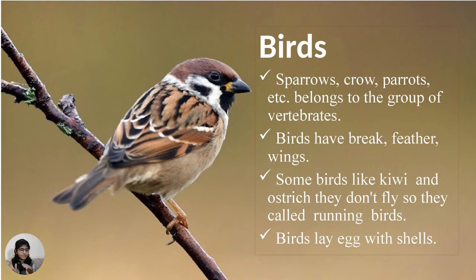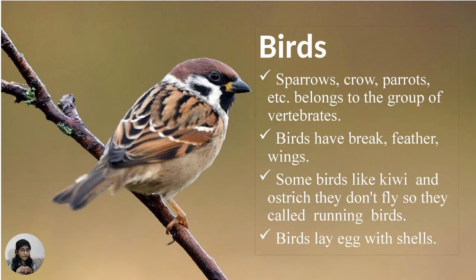Birds: Sparrows, crows, parrots, etc. belong to the group of vertebrates. Birds have beaks for feeding, feathers, and wings. Some birds like kiwi, ostrich, and penguins do not fly — they are called running birds. Birds lay eggs with shells.